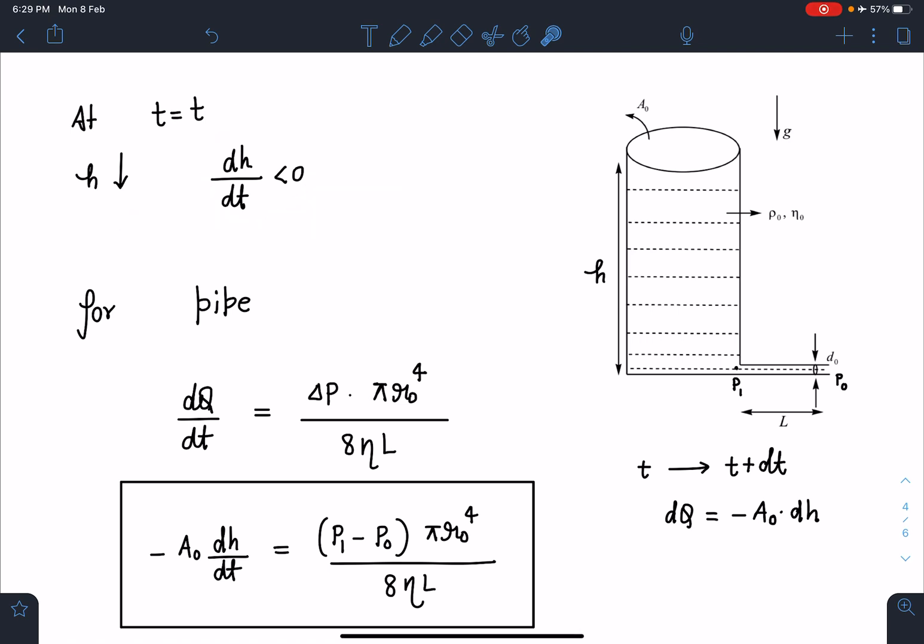Now for this particular pipe, I can apply Poiseuille's equation here. I will write dQ/dt as the volume flow rate, and this is ΔP, the pressure difference across the tube. Here pressure is P₁ and here it is P₀, so P₁ minus P₀, times π r₀⁴ divided by 8ηL.